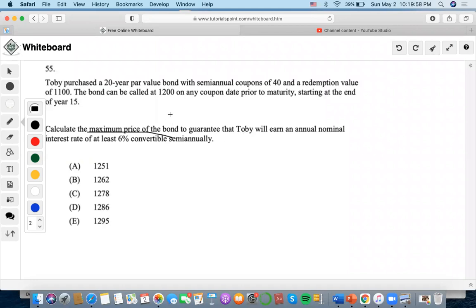So Toby purchased semi-annual coupons of $40 and there's a redemption value involved, and they're talking about maximum price. So I am assuming that we are using the bond pricing formula.